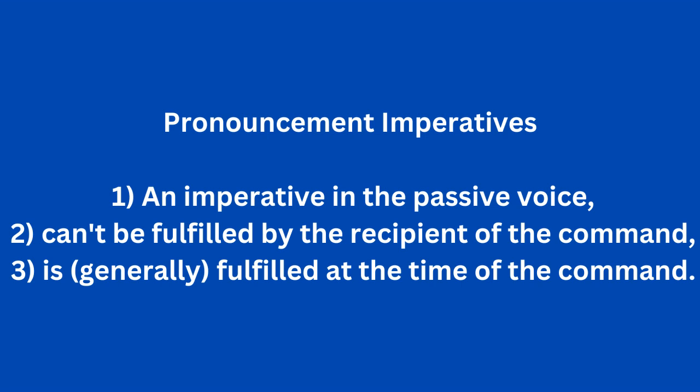We're going to talk about pronouncement imperatives. Pronouncement imperatives are imperatives — which are commands — in the passive voice. In a passive, you're not actively doing something; something is being done to you. So this is a command in the passive voice that can't be fulfilled by the recipient of the command. The person receiving the command can't do the thing being commanded. And the thing being commanded is generally fulfilled at the time of the command — it's a rhetorical device that signals the occurrence of something, signaled strongly through the use of this passive command.